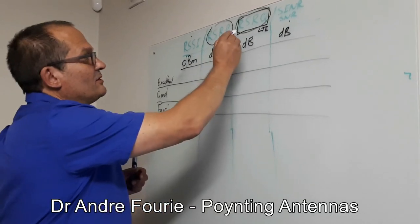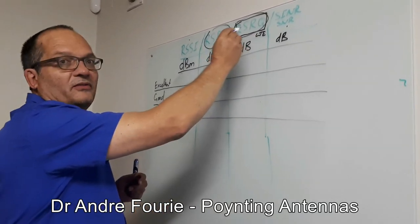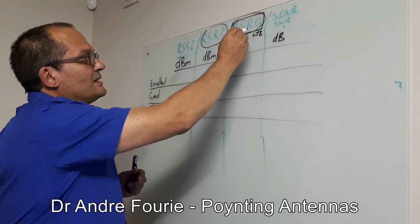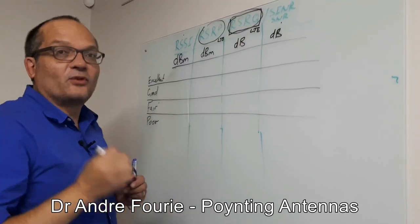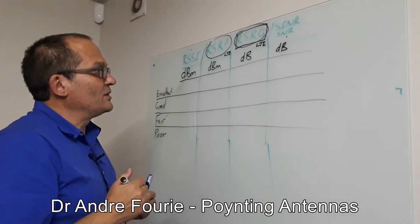So most important for LTE or OFDM or 5G is this RSRQ, receive signal receive quality, because that indicates you the signal relative to the noise.